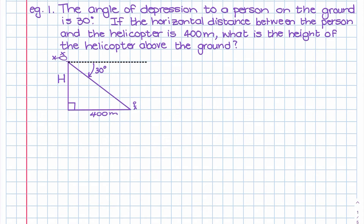Now that we know how to work out angles of elevation and depression, let's look at a worked example. This question tells us that the angle of depression from a helicopter to a person is 30 degrees — that's the angle going from the horizontal downwards towards the diagonal. We're also told the horizontal distance between the person and the helicopter is 400 meters, and the question asks for the height h of the helicopter above the ground.